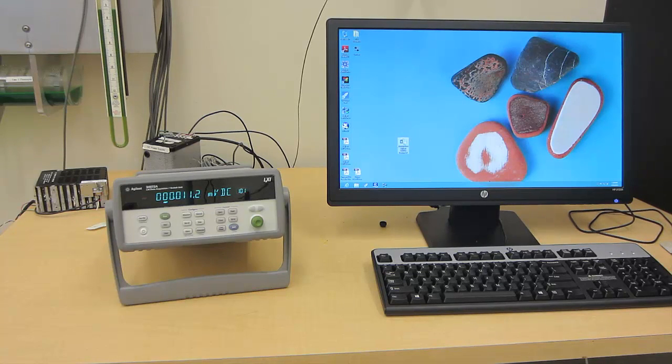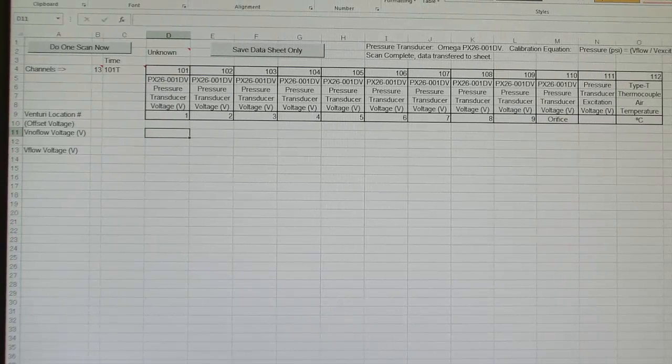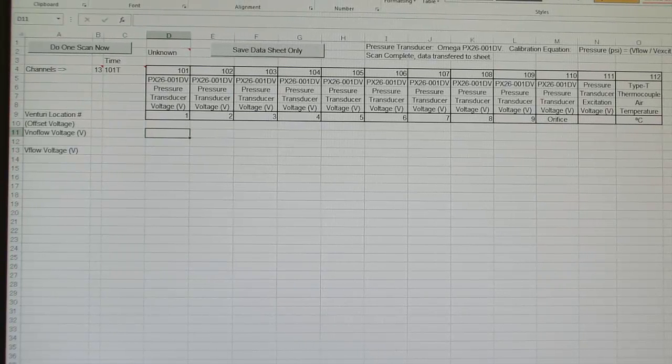We will use the spreadsheet called Venturi Flow Agilent 34972A version 1.2. When it opens, make sure to enable the macros.